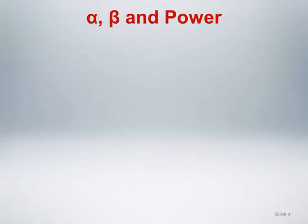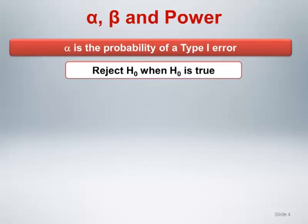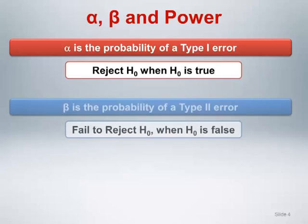Let's quickly review the meaning of some of these quantities. Alpha is the probability of making a type 1 error, which is rejecting H0 when H0 is true. Beta is the probability of making a type 2 error, which is to fail to reject H0 when H0 is false.